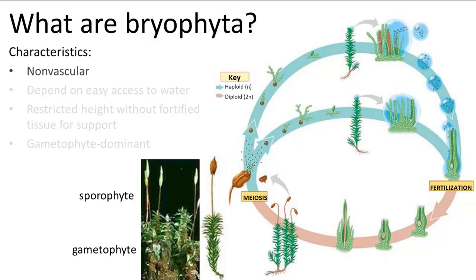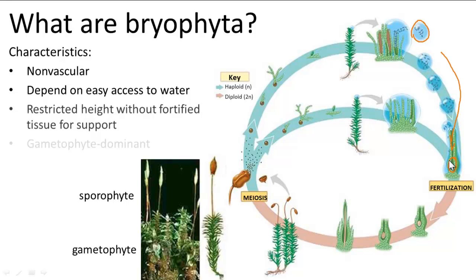Bryophyta are nonvascular plants, such as mosses, and they're found in moist or damp places because they need easy access to water for living and reproducing. In order for fertilization to occur, the bryophytes depend on water to carry their male gametes over to their female gametes. They're also generally short because they don't have fortified tissue for support.